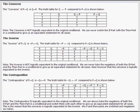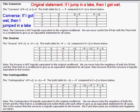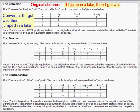Now we are going to look at the converse, inverse, and contrapositive. Let's suppose our original if-then statement is: if I jump in a lake, then I get wet. The converse is obtained by switching the if and then parts around, so the converse is: if I got wet, then I jumped in a lake. If you jump in a lake, you do get wet — but if you got wet, does that mean you had to have jumped in a lake? No. There are lots of different ways you can get wet; it could just start raining. So it doesn't seem like it follows.